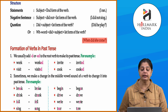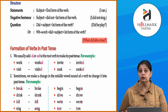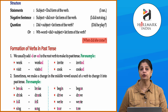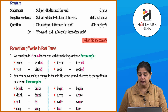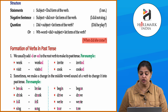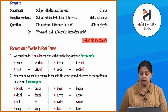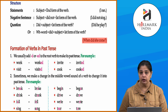For WH questions: WH word plus 'did' plus subject plus first form of the verb — for example, 'When did she come?' So here 'when' is the WH word, 'did' is the auxiliary, 'she' is the subject, and 'come' is the first form of the verb. In negatives, words like 'not,' 'no,' or 'none' are used — so 'I did not sing' becomes your negative sentence.